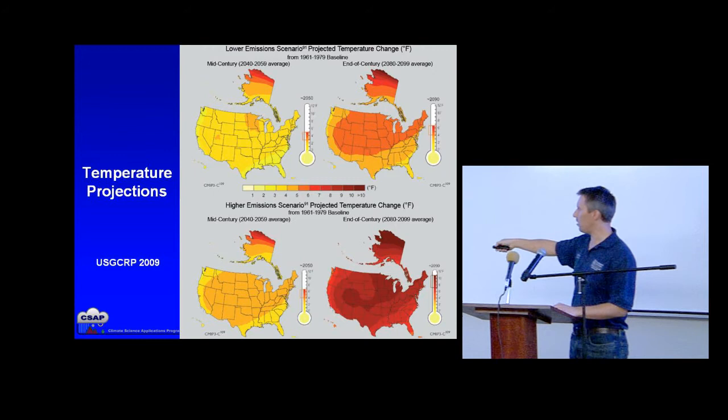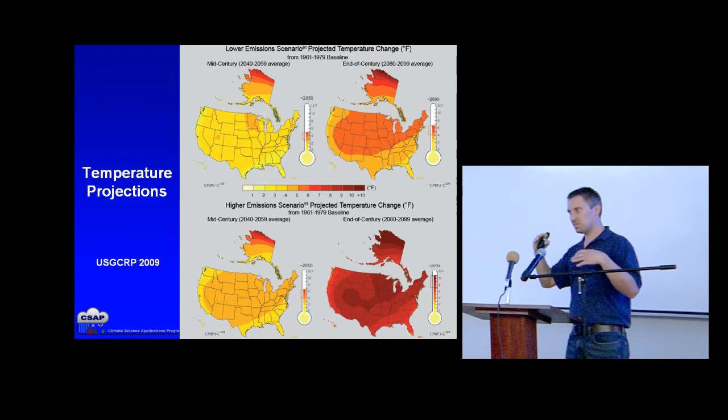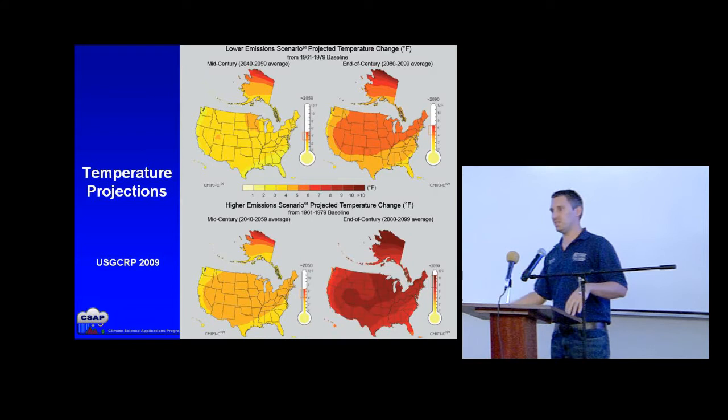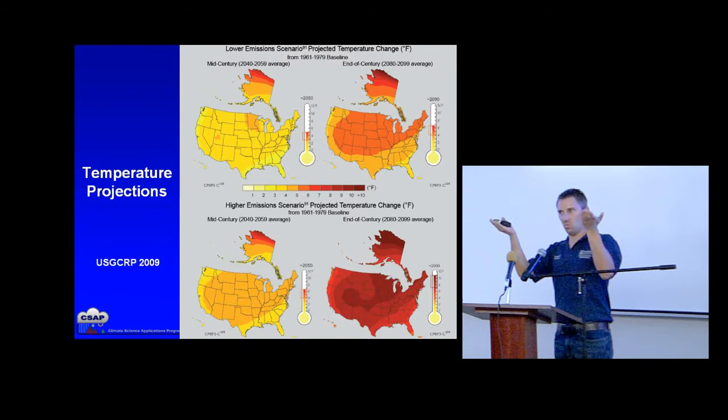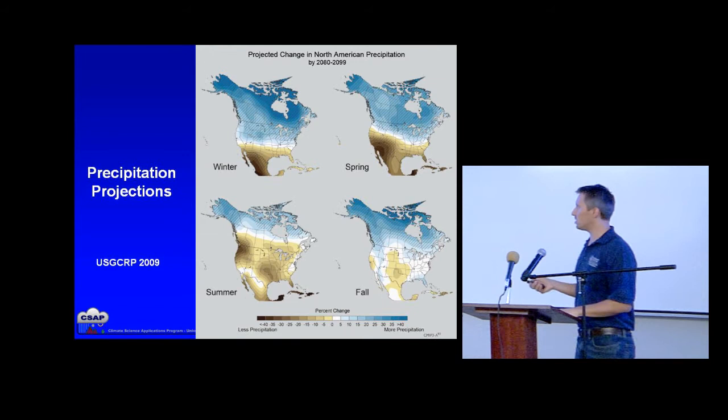Under a higher emission scenario, you get more warming — by mid-century everyone is at 4 degrees Fahrenheit warmer, and by late-century we're up to 8 to 10 degrees Fahrenheit above average. Your annual signal is still going to be punctuated by freezing events and snow, but your hottest days are hotter, and on average most of your days are warmer than before. Weather is still weather; climate is still climate.